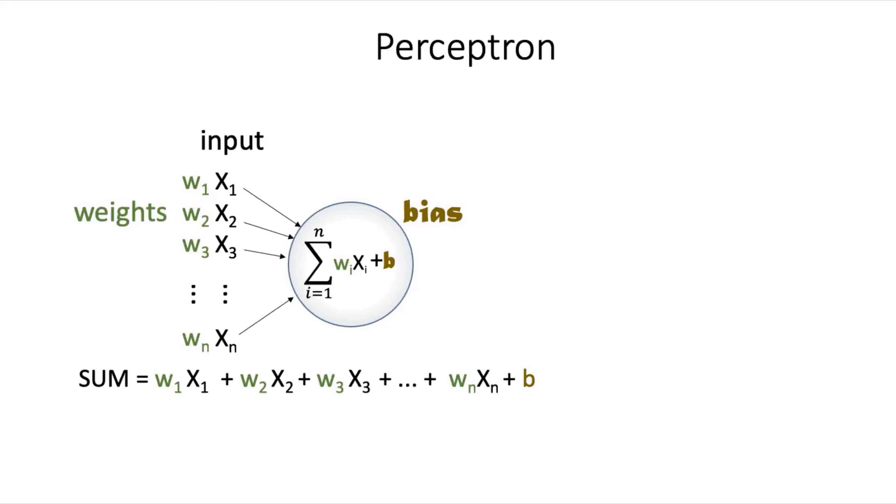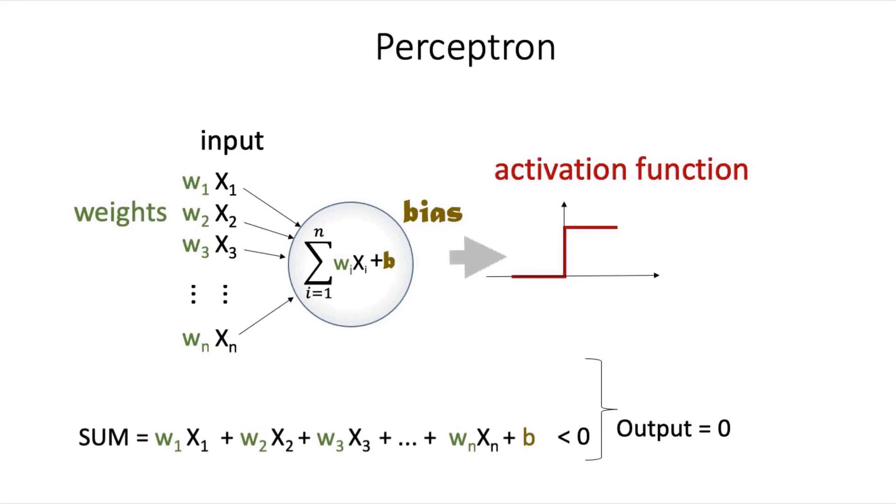The neuron then has to go through one final computational step, which is to pass this sum of weighted inputs and bias through an activation function. In the original perceptron model, the activation function was a step function. So this means that if the sum was greater than or equal to zero, the neuron will output the value one. However, if the sum is less than zero, the neuron will output a value zero.